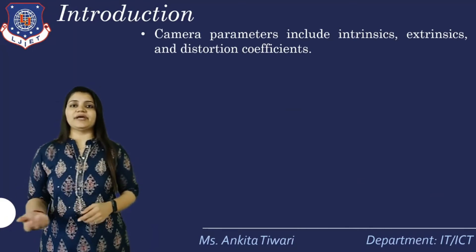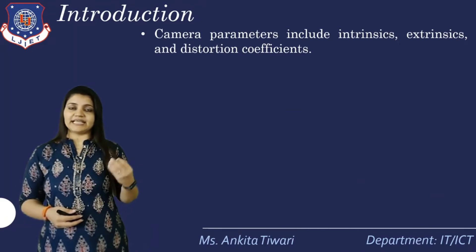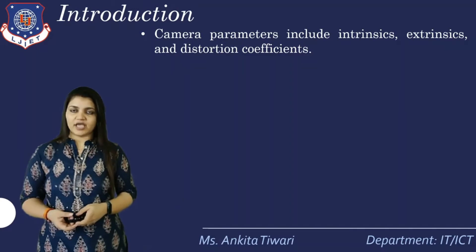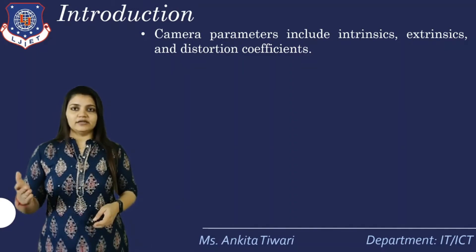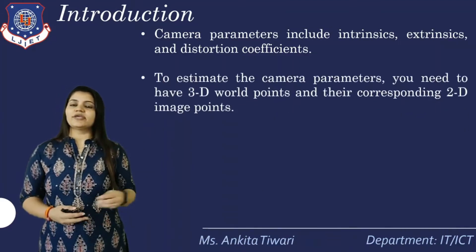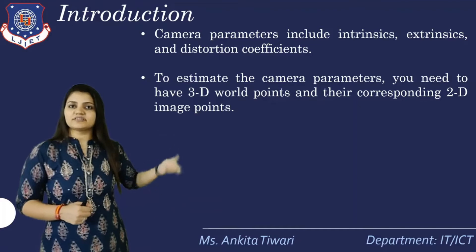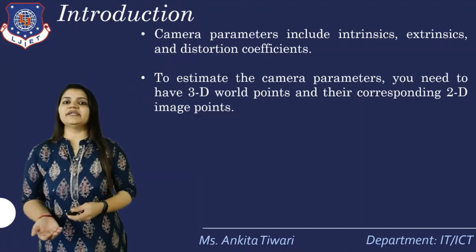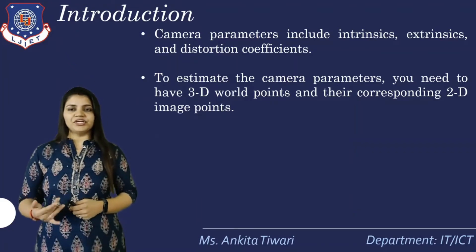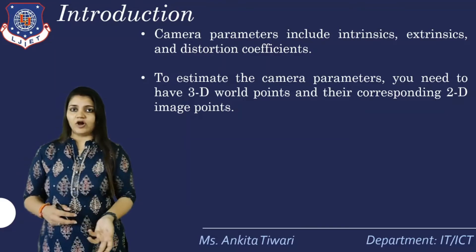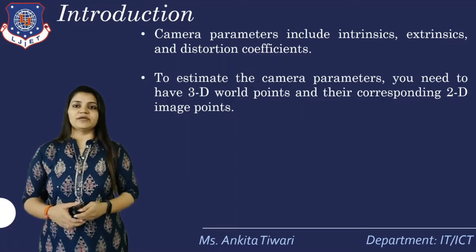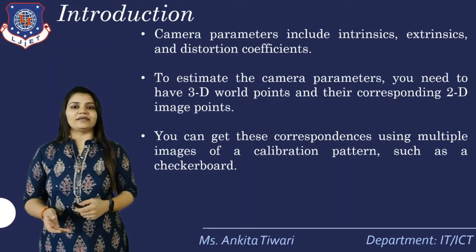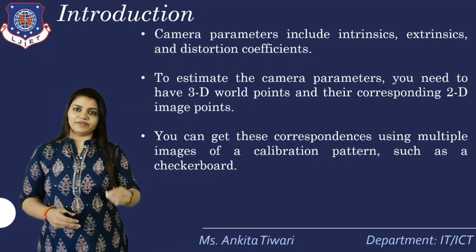The camera parameters include intrinsic parameters, extrinsic parameters, and also distortion coefficients, which can be used for correcting lens distortion to get image clarity. To estimate these camera parameters — intrinsic parameters or distortion coefficients — you need 3D world points and their corresponding 2D image points. You can get these correspondences using multiple images of a calibration pattern such as a checkerboard.